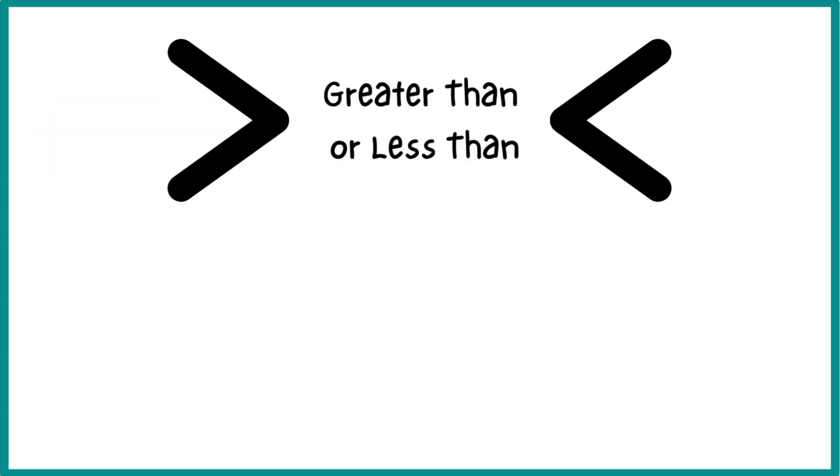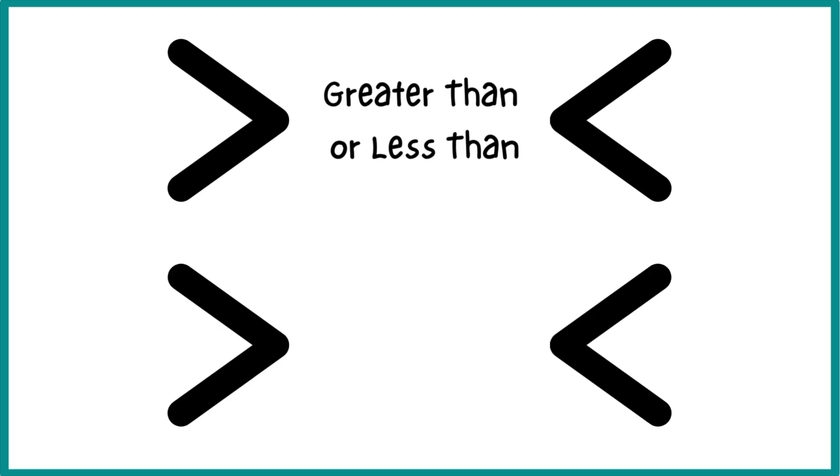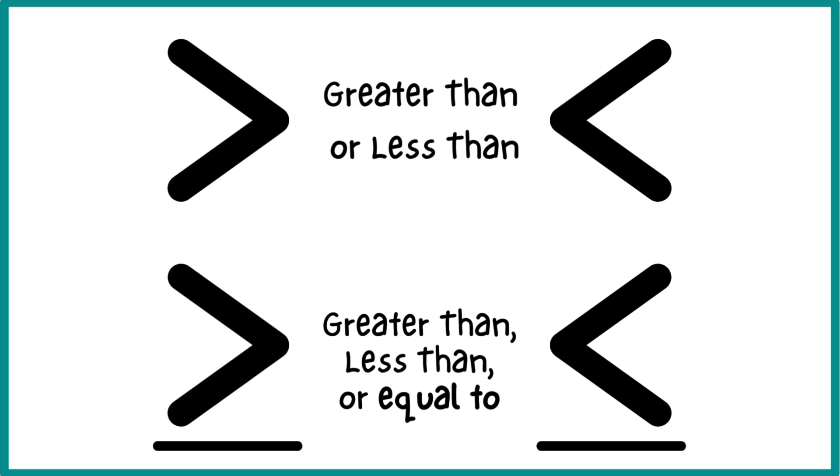First things first, you're going to see some symbols. We know that this little alligator means greater than and less than, and if it has the line underneath, that means greater than or less than or equal to.